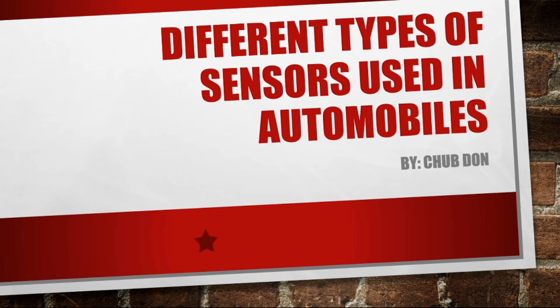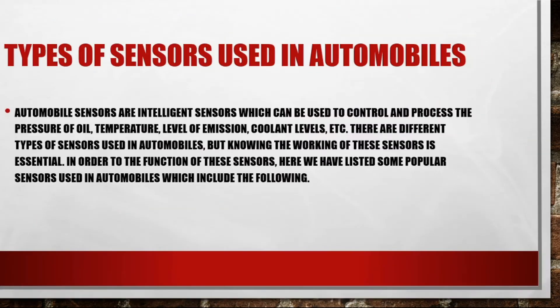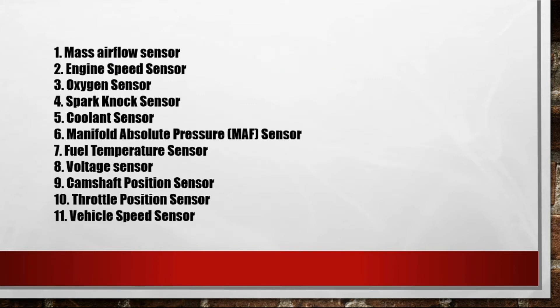Different types of sensors used in automobiles. Automobile sensors are intelligence sensors which can be used to control and process the pressure of oil, temperature, level of emission, coolant levels, etc. There are different types of sensors used in automobiles, but knowing the working of these sensors is essential in order to understand the function of these sensors.